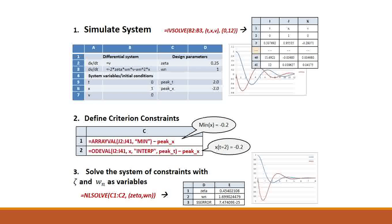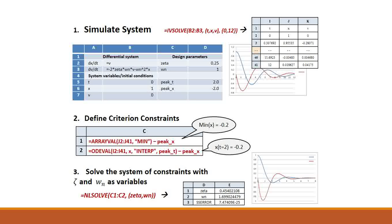Solving this in other computing software requires advanced programming skills, but it can now be done in three simple steps in a spreadsheet. The first step is to simulate the differential system using the ivsolve function, which we demonstrated earlier. Next, the user defines two constraints, in this case an overshoot of 0.2 at time equals 2.